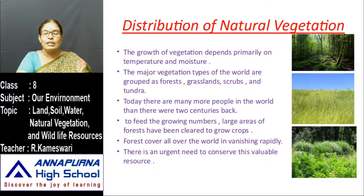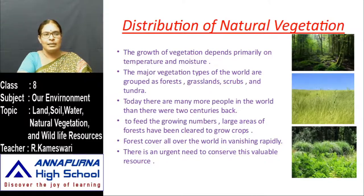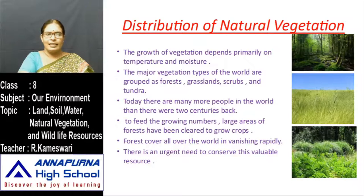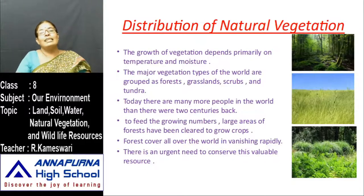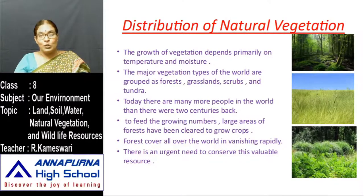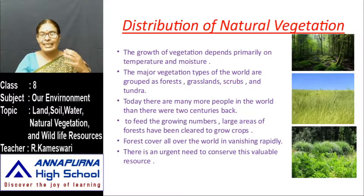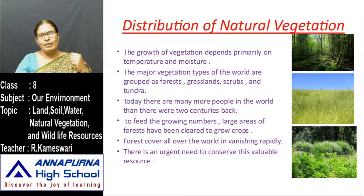Take India as an example — southern India is too hot while north India, like Jammu and Kashmir, is too cold. Temperature and moisture differ from one place to another. The total world is divided into three zones: the Torrid Zone, the Temperate Zone, and the Frigid Zone. The Torrid Zone receives a lot of heat from the sun and a lot of rainfall — thick forests grow very well here, and a lot of wildlife lives happily in this area.